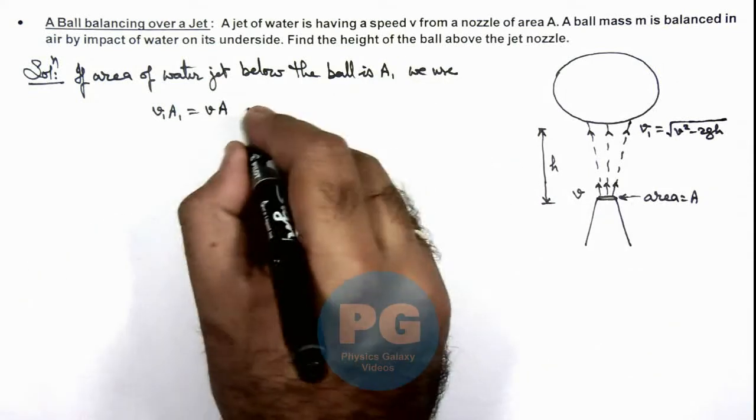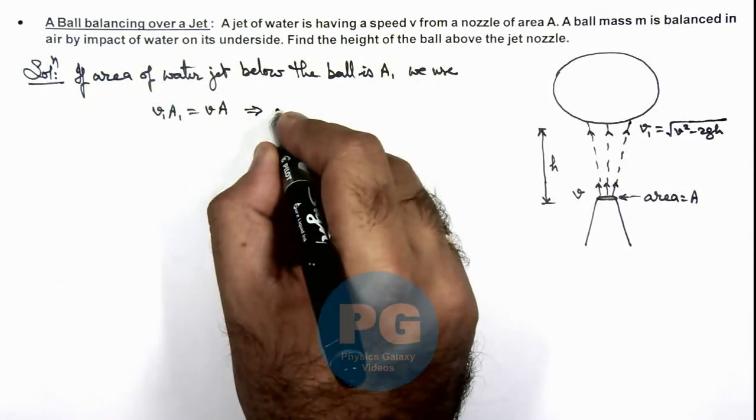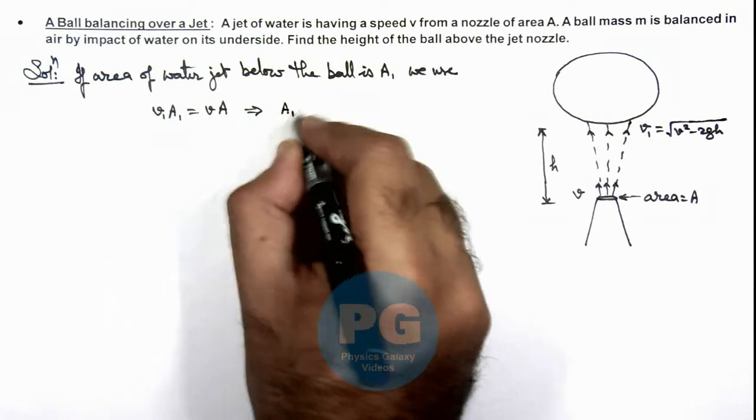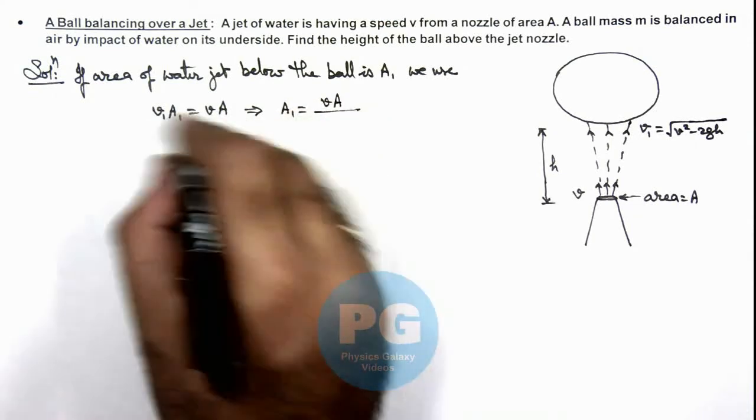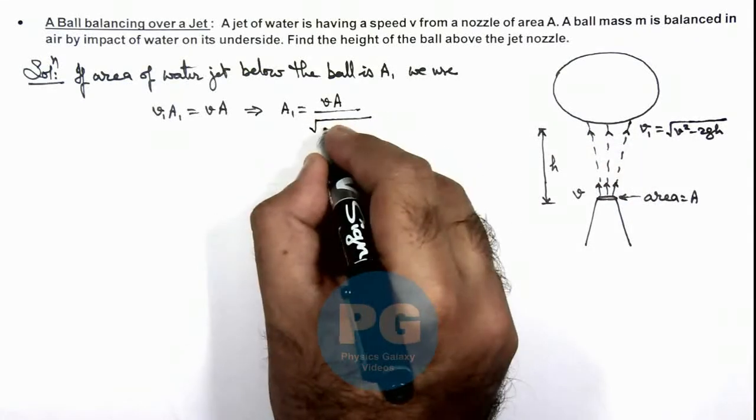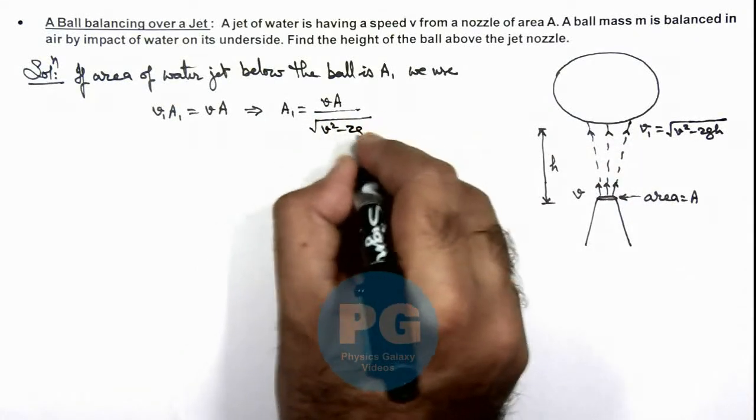So from here we are getting the value of area A1, which is given as v A divided by the value of v1, which we have calculated as root of v squared minus 2gh.